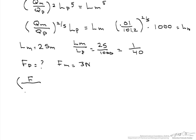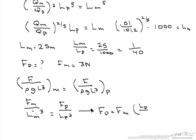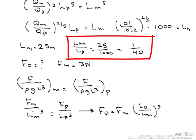Force divided by rho·g·L³ of the model equals force divided by rho·g·L³ of the prototype. Since it is the same fluid and gravity is constant, we can write: F_model / L_model³ equals F_prototype / L_prototype³. Rearranging, the force on the prototype equals the force on the model times (L_prototype / L_model)³. This is why we needed the length scale from the first part.